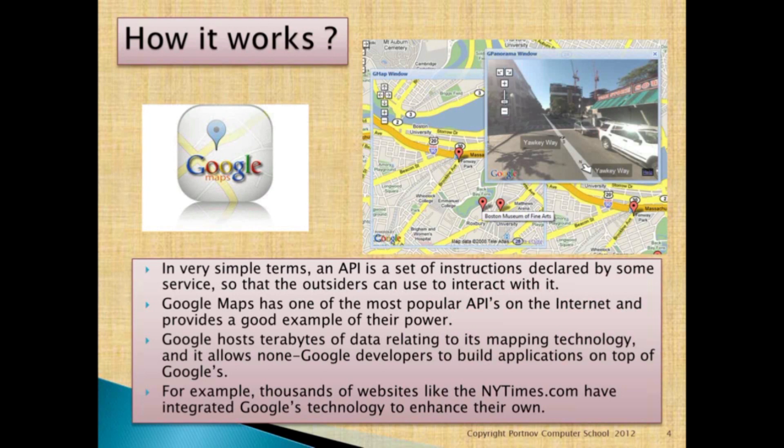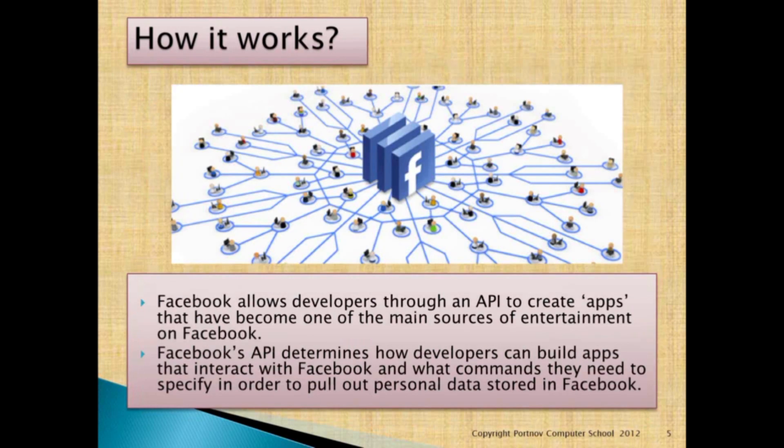Google has terabytes of data relating to its mapping technology and is allowing non-Google developers to build applications on top of Google's. For example, thousands of websites like the New York Times have integrated Google technology to enhance their own.